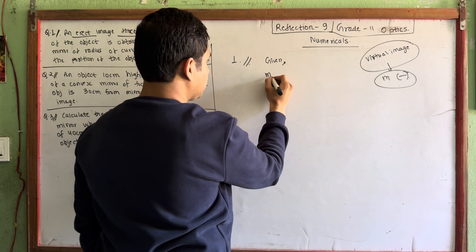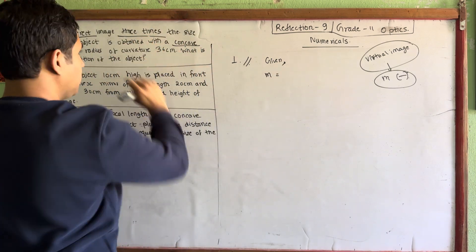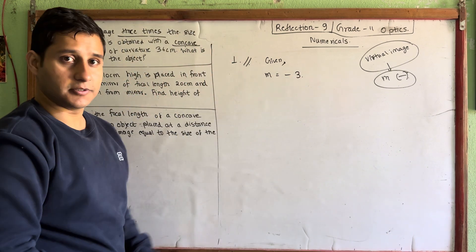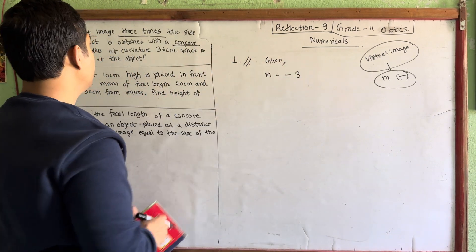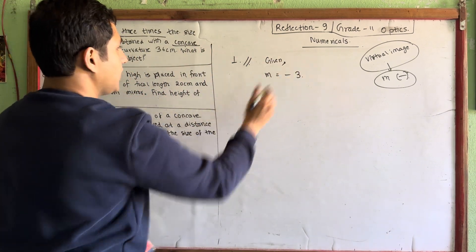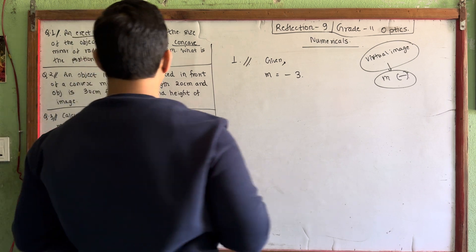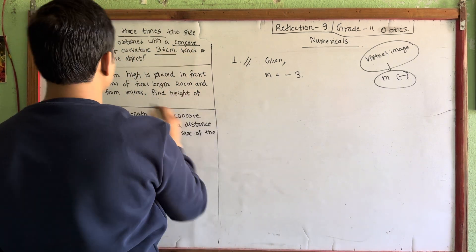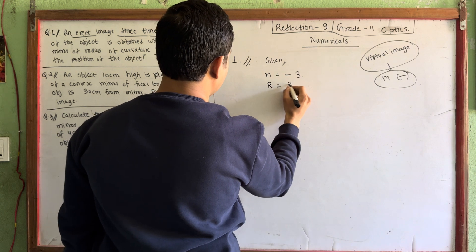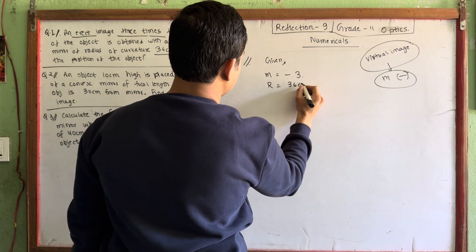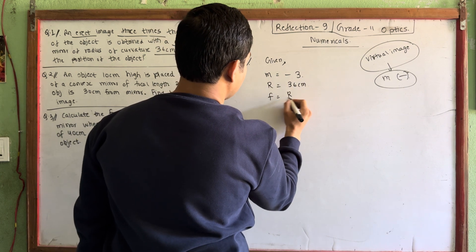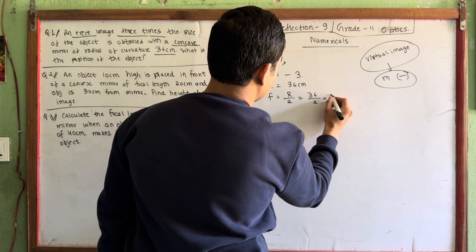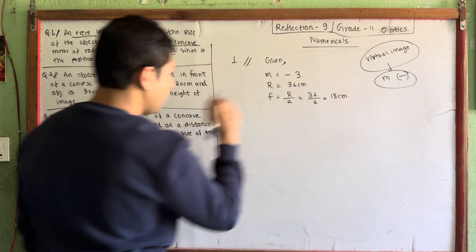How much magnification has to be? It is 3 times, so it has to be minus 3. Since magnification is minus 3. The radius of curvature R is 36 cm, so f = R/2 = 36/2 = 18 cm.